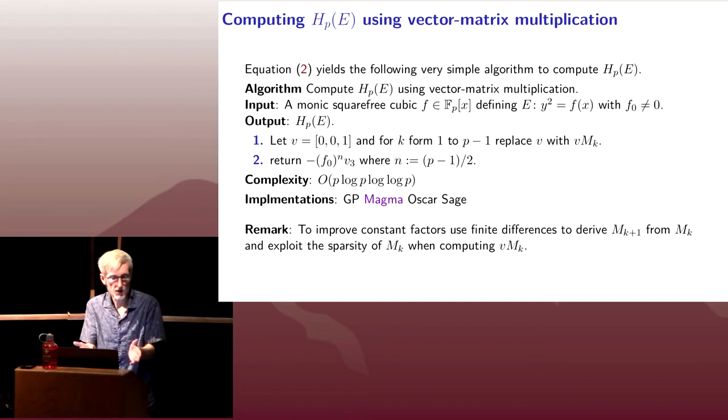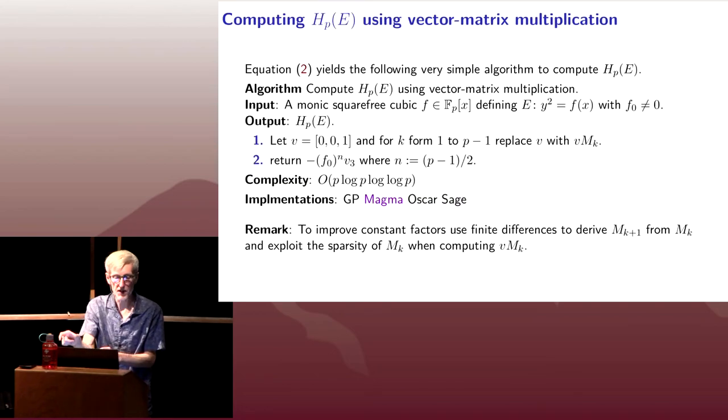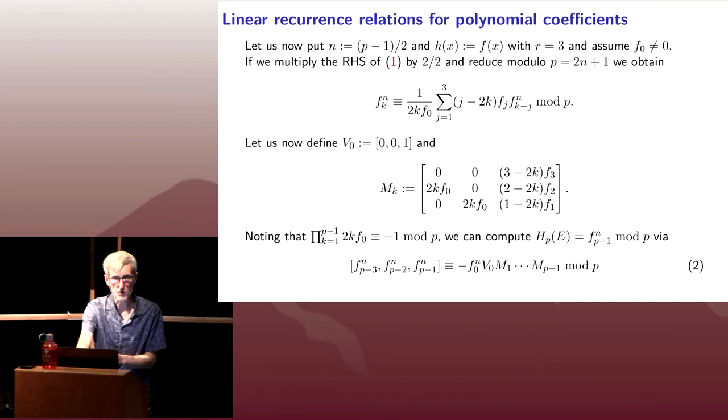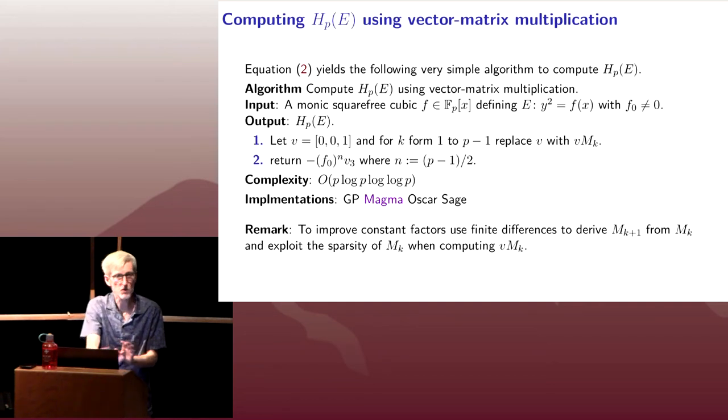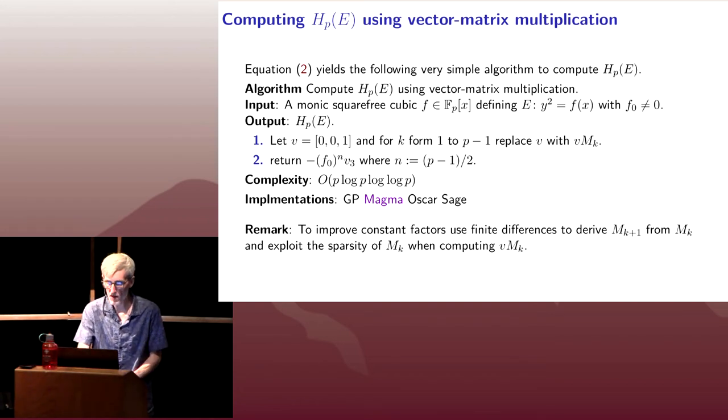Now, there's a couple things you can do to improve the constant factors. One thing is when we're going from one matrix to the next, rather than evaluating doing multiplications to compute the matrix entries, because the matrices themselves are just linear shifts of each other, we could compute them each successive matrix using finite differences. And the fact that there are a lot of zeros in this matrix, although it's only three by three, so there aren't so many, but imagine this were like a hundred by a hundred version of the same thing. There would be a whole lot of zeros, because there's only going to be, you know, whatever the dimension is, it's a linear number of non-zero entries. OK, so these actually absolutely make no difference in the elliptic curve case, but for higher genus curves, these optimizations are quite useful.